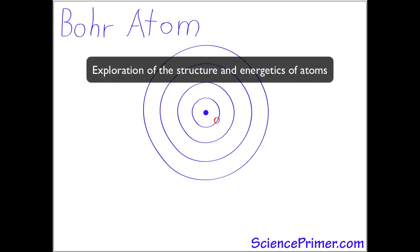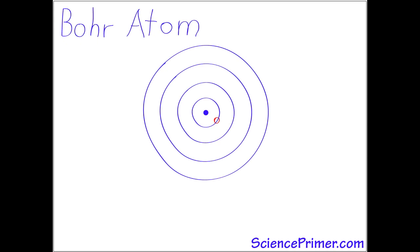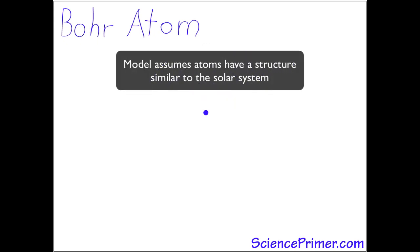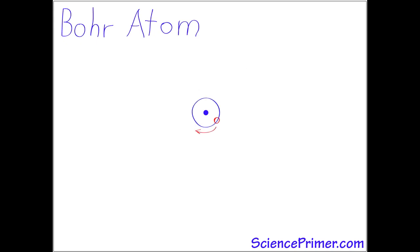The model assumes that the atom has a structure similar to that of the solar system with the nucleus at the center and the atoms electrons moving in circular orbits similar to the way planets orbit the sun.